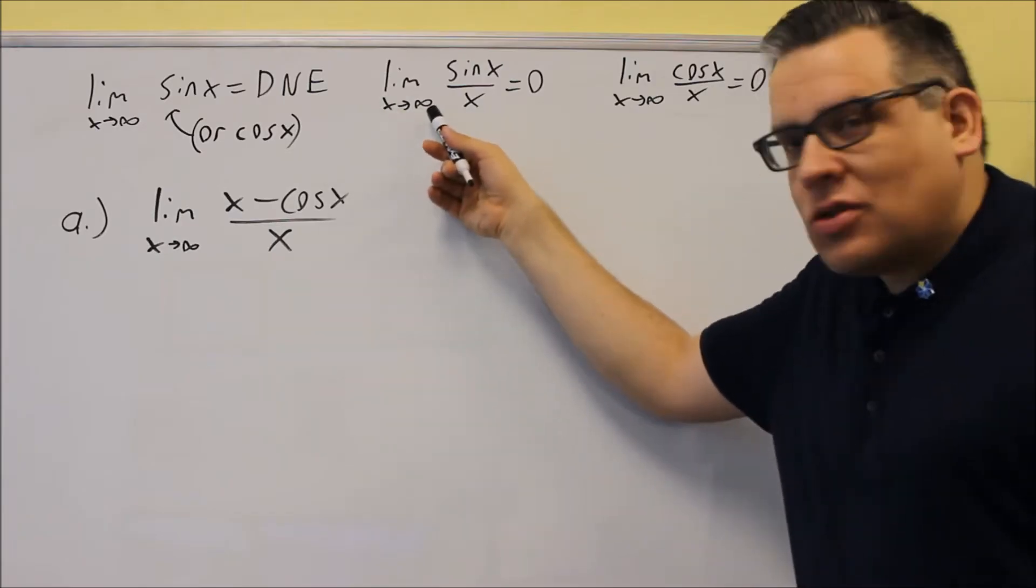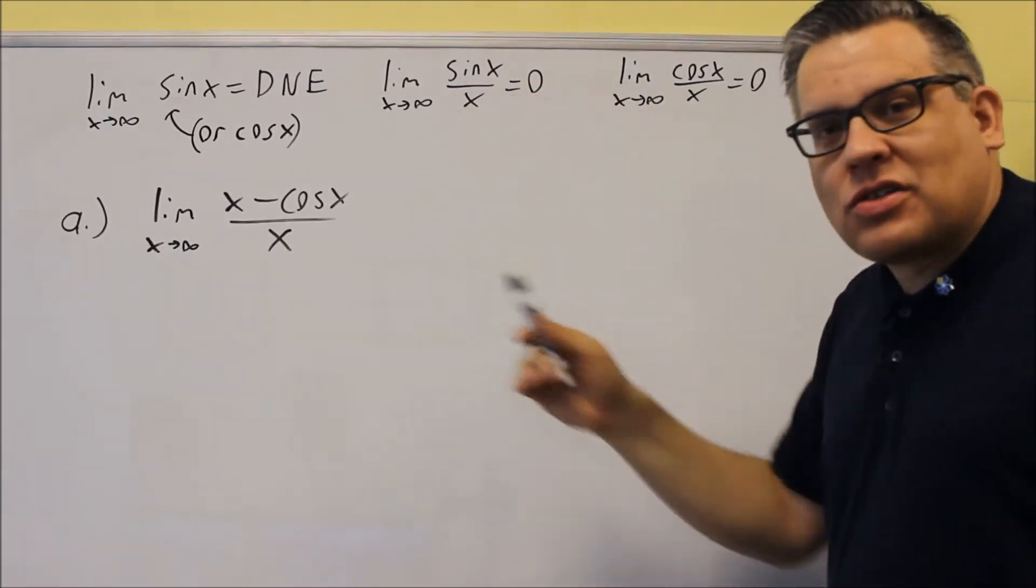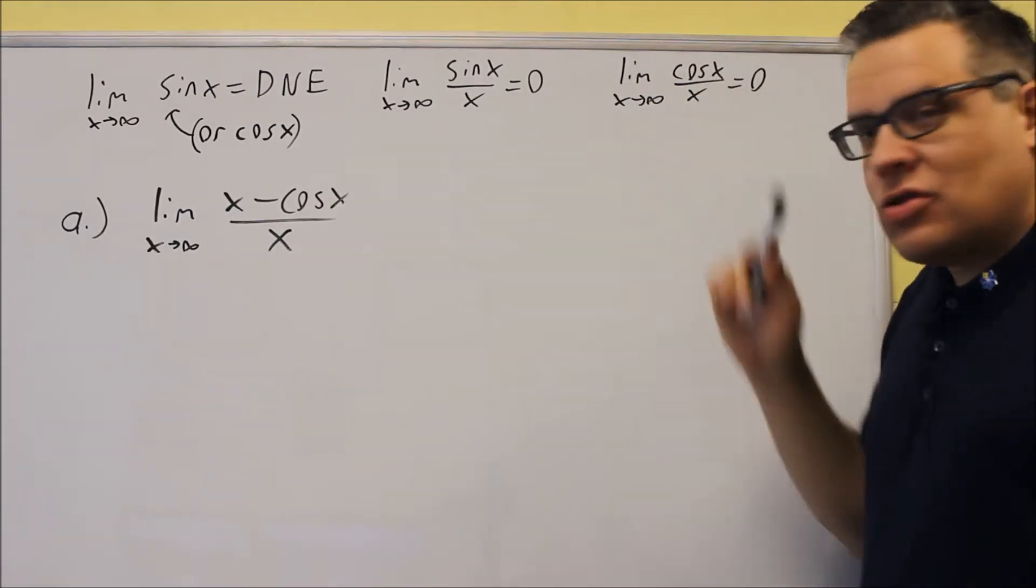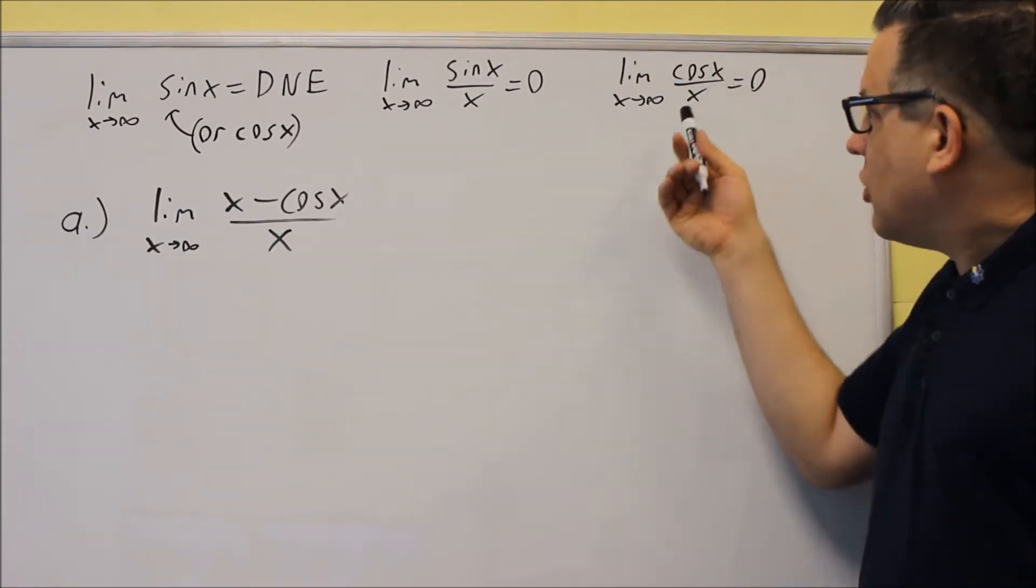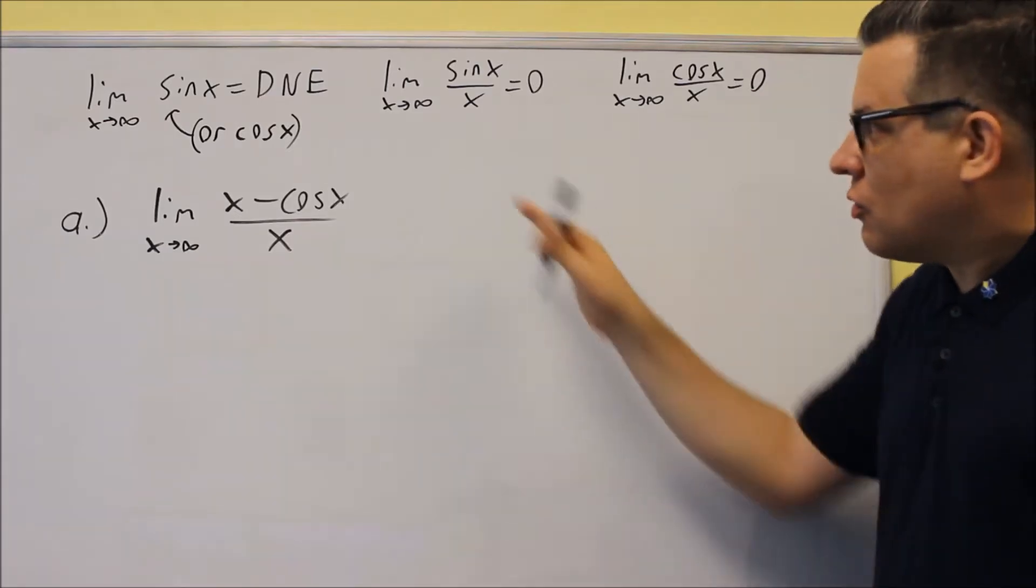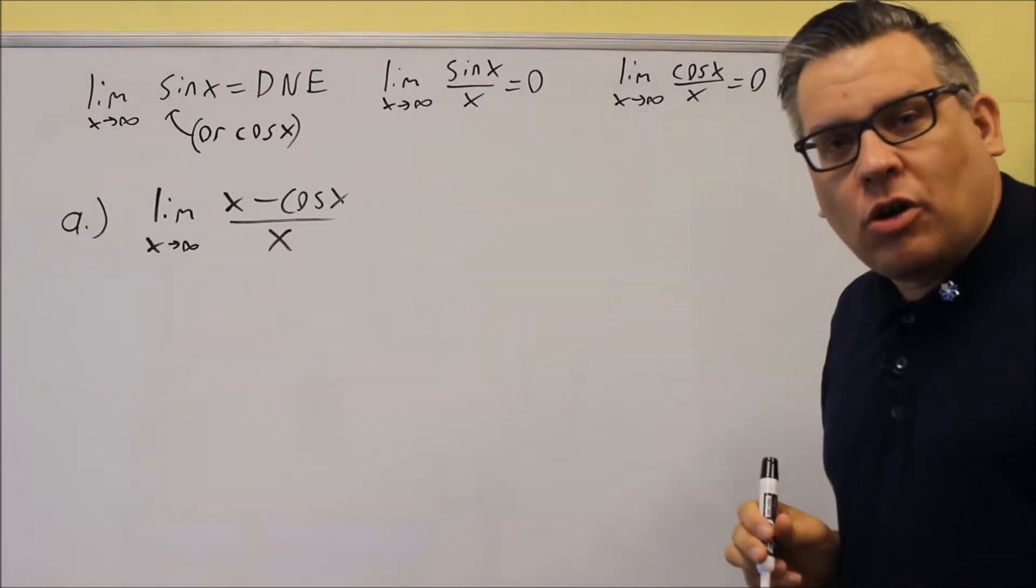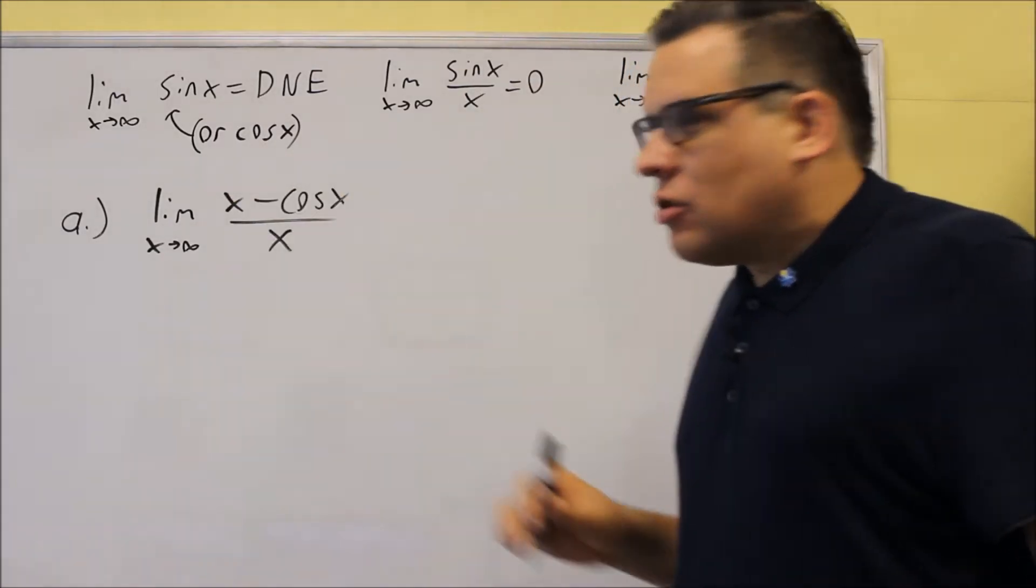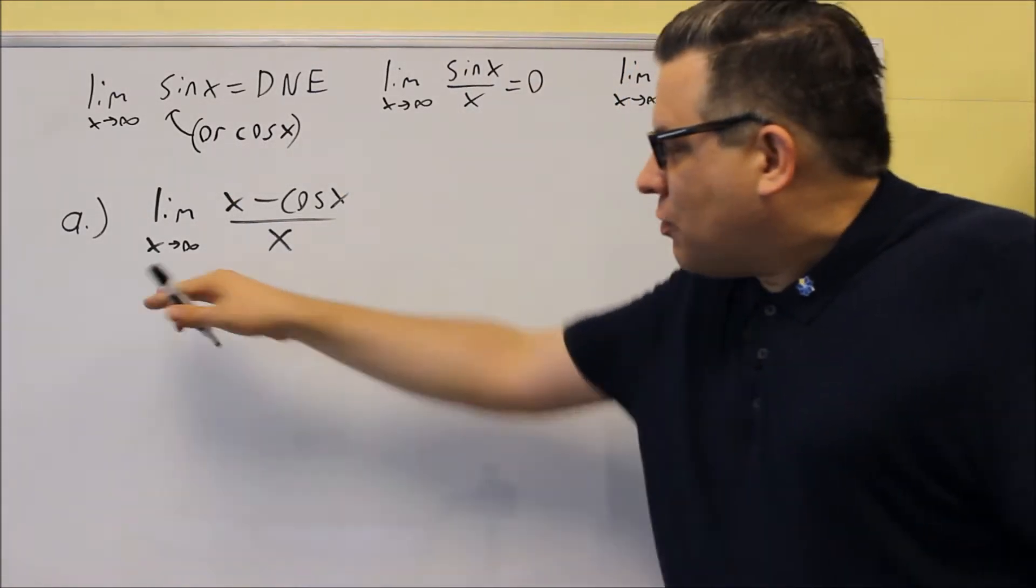But if x approaches infinity of sine x over x, that goes to 0. We also have 1 here for cosine as x approaches infinity. Cosine x over x equals 0. So there's some special limits that you want to be aware of. So we're going to use these now to answer a couple questions here. So let's do part A first.